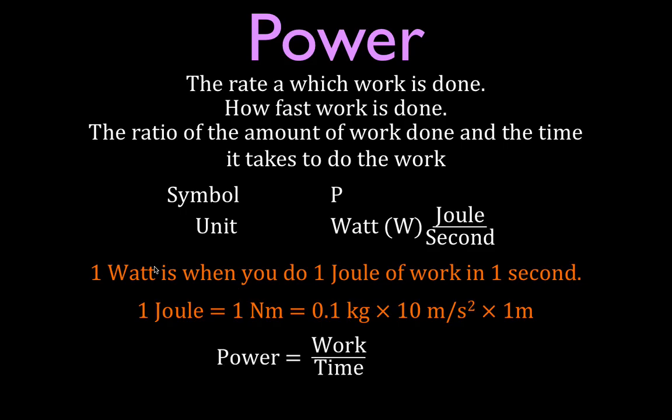The equation is simply power equals work divided by time. It's the ratio of the amount of work divided by the amount of time. Work is measured in joules. Time is measured in seconds. So power is joules per second, which we abbreviate capital W, watt.